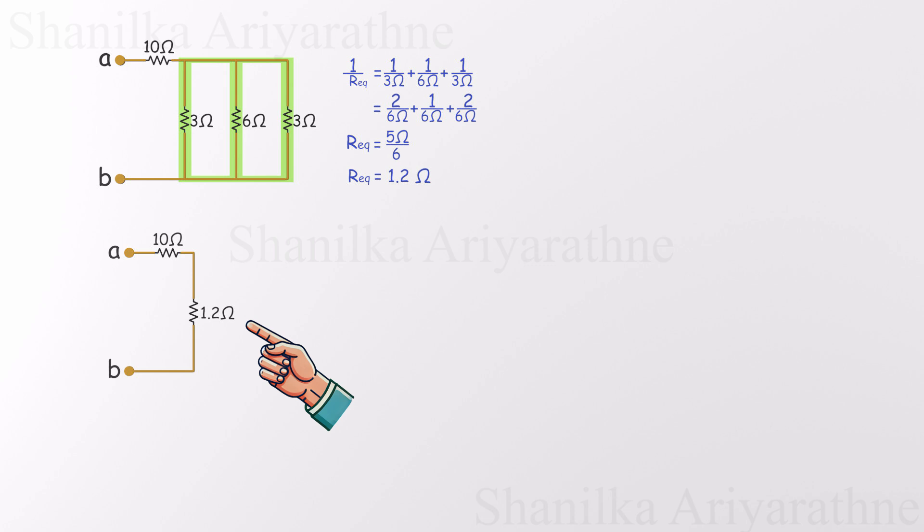Step by step, we're almost there. Now our circuit has boiled down to its simplest form, just two resistors in series. A 10 ohm and a 1.2 ohm. Add them together and we get a total equivalent resistance of 11.2 ohms.